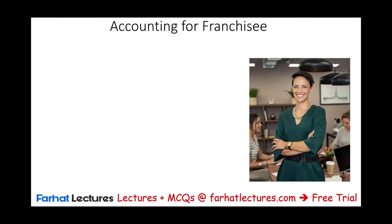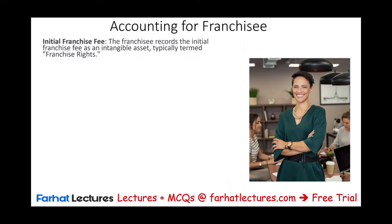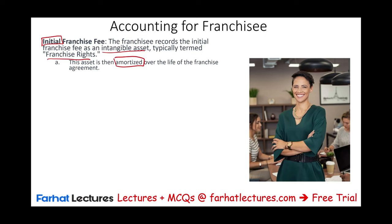The first thing you have to do when you start a franchisee is to pay an initial fee — basically, an initial franchise fee paid to the franchisor. You would record this initial franchise fee as an intangible asset, which gives you the right to operate under the brand name, company name, and company logo of Dunkin' Donuts or McDonald's. This asset is usually called franchise rights, and it is amortized over the life of the franchise agreement.